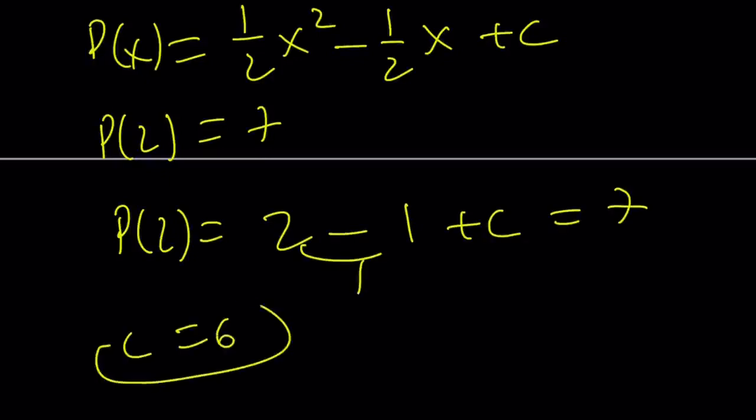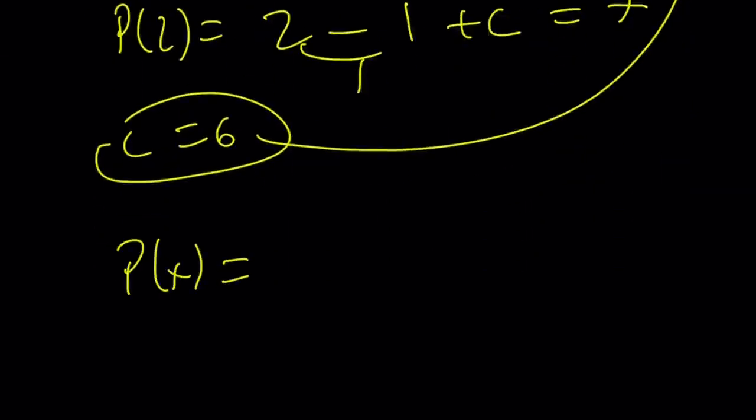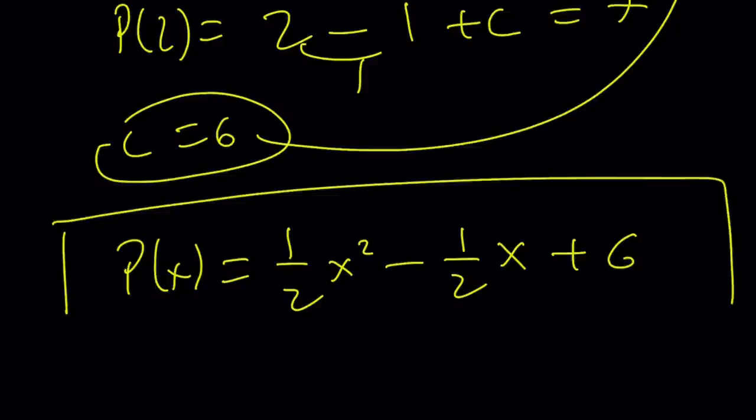Awesome. Go ahead and back substitute, and you're good to go. So P of x can be written as 1 half of x squared minus half of x plus 6, and that brings us to the end of the first method.